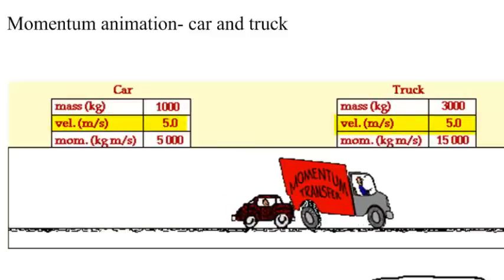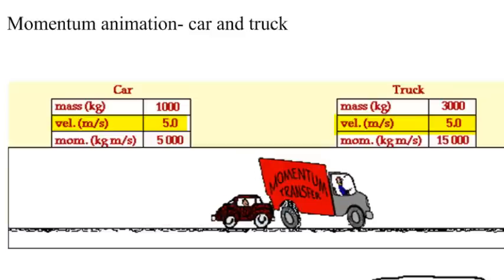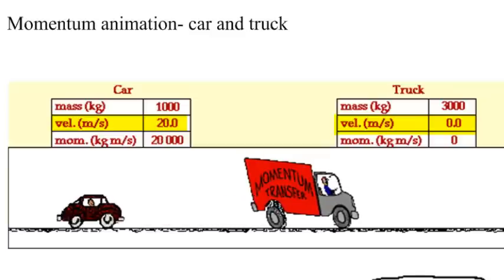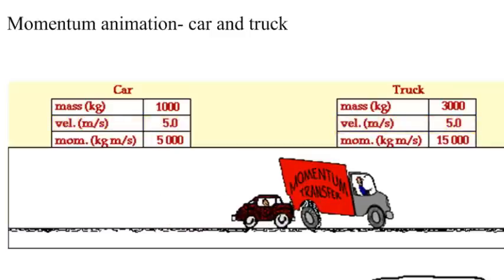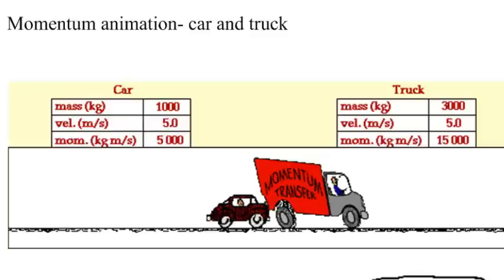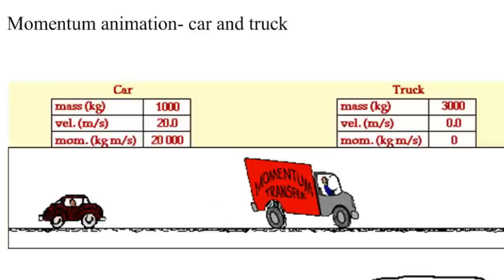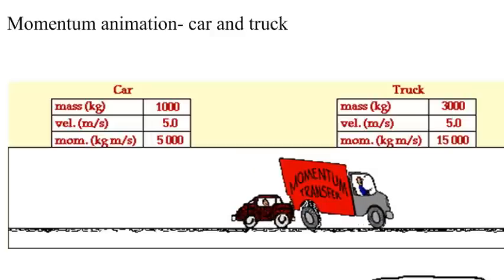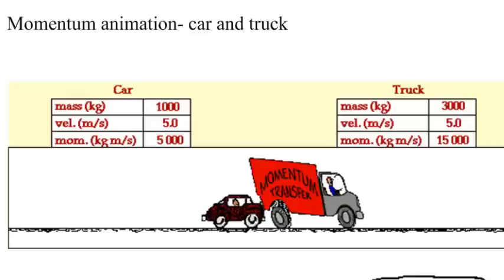And now you notice that the car's velocity is less. The car goes from 20 meters per second to 5 meters per second, and the truck goes from 0 meters per second to 5 meters per second. So it's received some of that velocity from the car. Now you probably think to yourself, the car started with 20, the truck had 0, now the car has 5 and the truck has 5. Where did the velocity go? Well, we've got to look more into this.